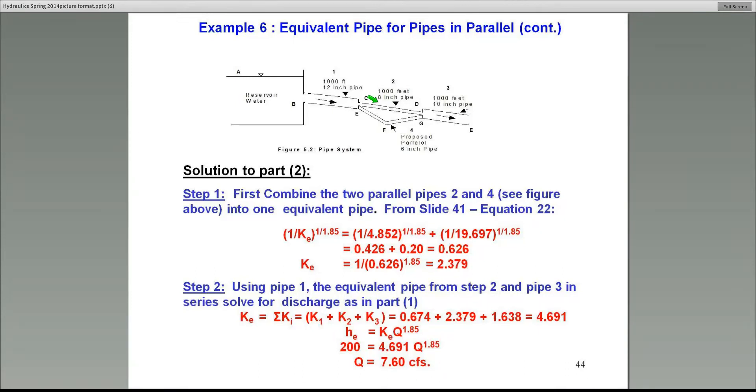What you want to do is first take these two parallel pipes and convert them into a single pipe. That KE is obtained by taking the reciprocal sum of the two pipes, two and four. Their KE values are K2 = 4.852 and K4 = 19.697. You take the reciprocal sum and get a KE of 2.379.